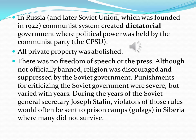In Russia and later the Soviet Union, which was founded in 1922, the communist system created a dictatorial government where political power was held by one political party, the CPSU, known as the Communist Party of the Soviet Union. It was a one-party system, meaning there were no other political parties and no opposition. All private property was abolished. There was no freedom of speech, no freedom of press. Although not officially banned, religion was discouraged and suppressed by the Soviet government.